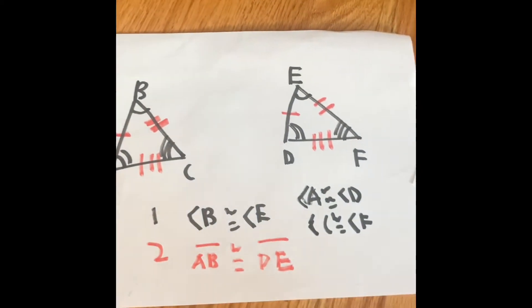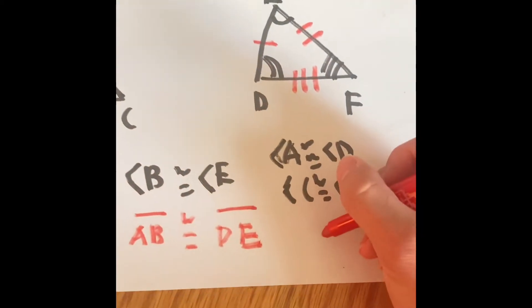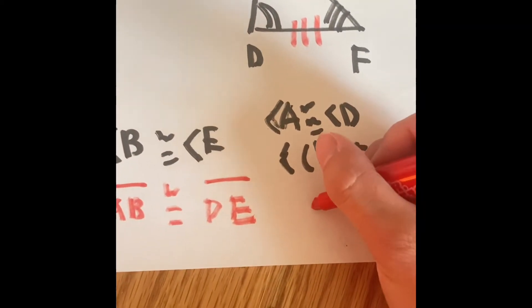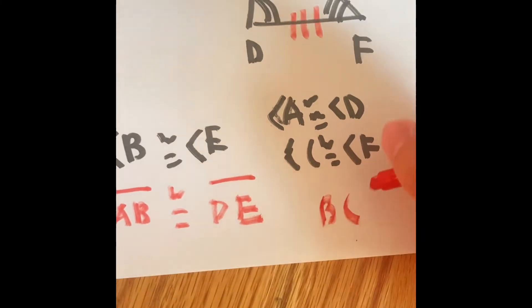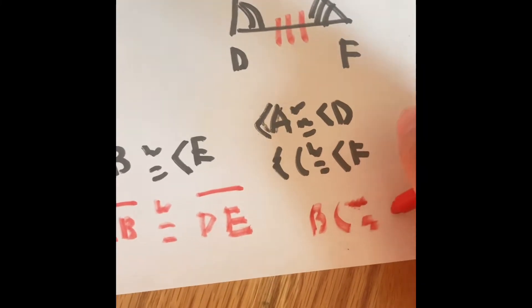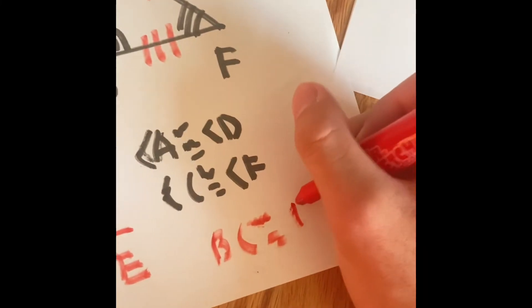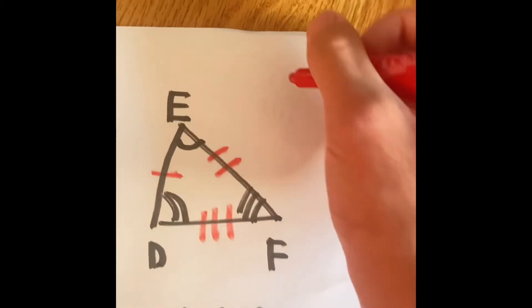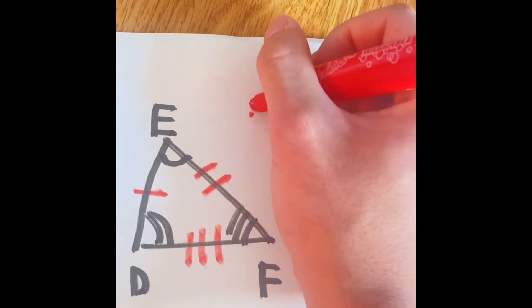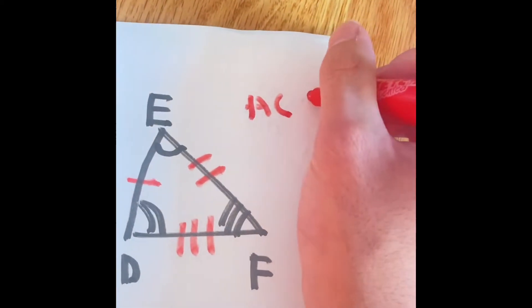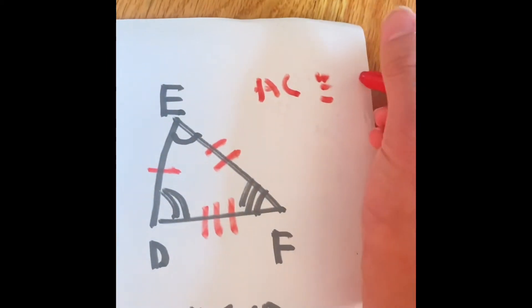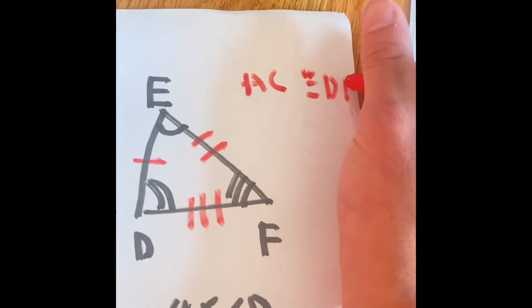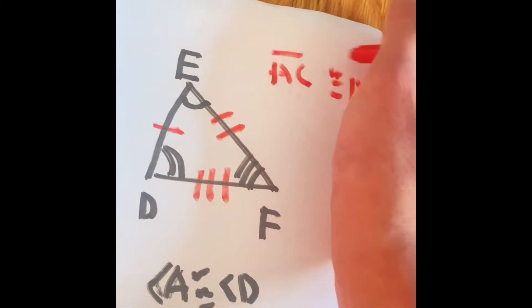For the segments, we can say that BC is going to be congruent with EF. And we can also say, on the part up here, that AC is going to be congruent with DF as a segment.